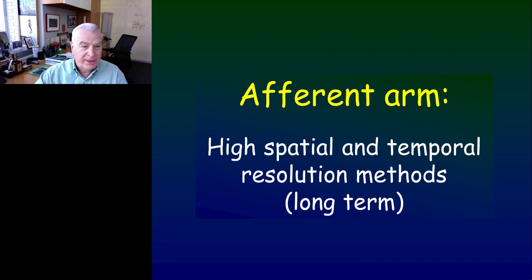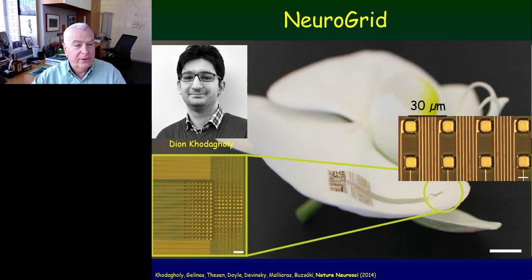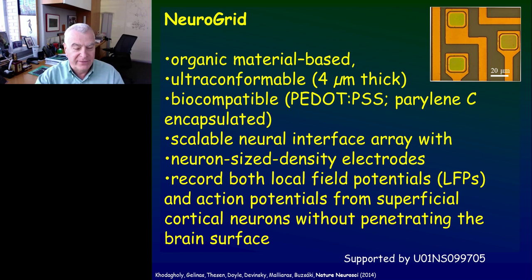The afferent arm can be a variety of different things, as is the case with the actuator arm. In our case, we decided we would like to use neurogrid as the afferent arm and transcranial electrical stimulation as the actuator arm. Neurogrid is a device which looks like a piece of wrapping paper. It's conformable, it's organic, highly hydrophobic, so it sticks to the surface of the brain. It is partly carbon-based, which is perfectly compatible with any tissue. The recording sites, as you can see, are very small — they are neuron-sized and are imprinted in this circuitry.